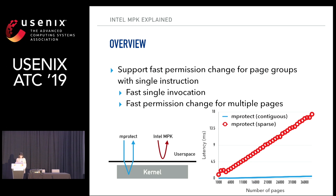However, Intel MPK changes permissions with a single instruction in user space. It also provides fast permission change for multiple pages. In this graph, you can see that the latency of MProtect with contiguous memory and sparse memory both increase linearly when changing the permission of multiple pages. However, Intel MPK spends only a single constant latency to change a set of pages.